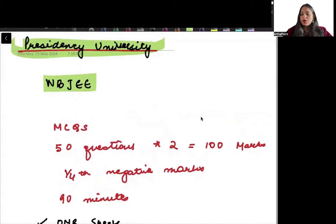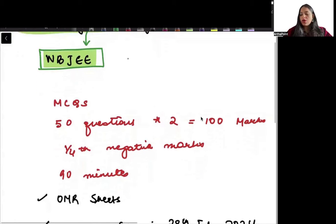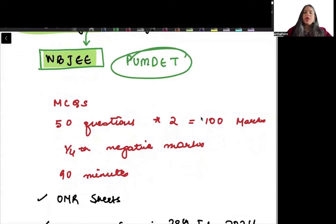Presidency University conducts an exam through the West Bengal JE Board, also known as PUMDET, in which you need to give an exam for your MA in Applied Economics.